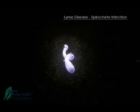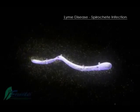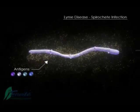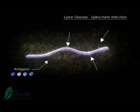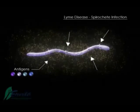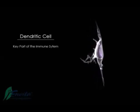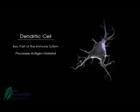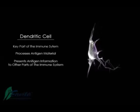The spirochete moves in a corkscrew-like motion as it burrows its way through the tissue and organs of the body. The spirochete contains antigens, which are like fingerprints that identify this infection to the body's immune system. The dendritic cell is a key part of the immune system, and one of its major functions is to process the antigen and present it to other parts of the immune system — this is why it is called the antigen-presenting cell.